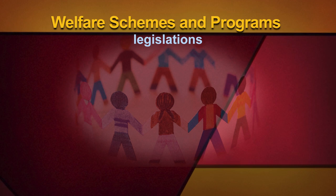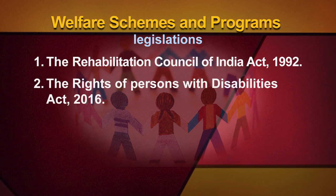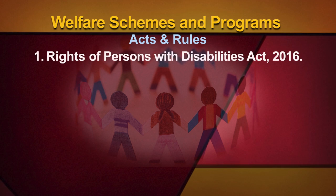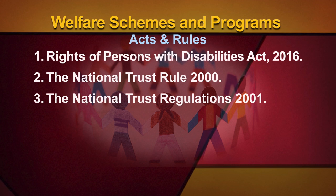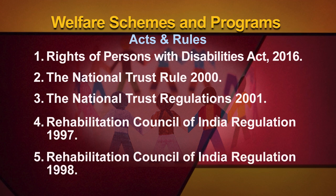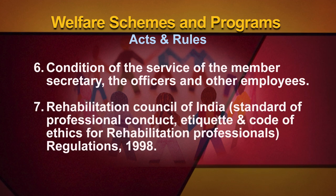The Department deals with the following legislations: (1) The Rehabilitation Council of India Act 1992; (2) The Rights of Persons with Disabilities Act 2016; (3) The National Trust for the Welfare of Persons with Autism, Cerebral Palsy, Mental Retardation and Multiple Disabilities Act 1999. Acts and Rules include the Rights of Persons with Disabilities Act 2016, The National Trust Rule 2000, The National Trust Regulations 2001, Rehabilitation Council of India Regulation 1997 and 1998, Condition of Service of the Member Secretary, and Standard of Professional Conduct, Etiquette and Code of Ethics for Rehabilitation Professionals Regulations 1998.